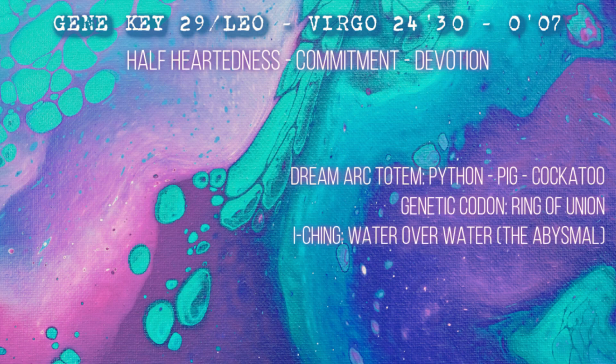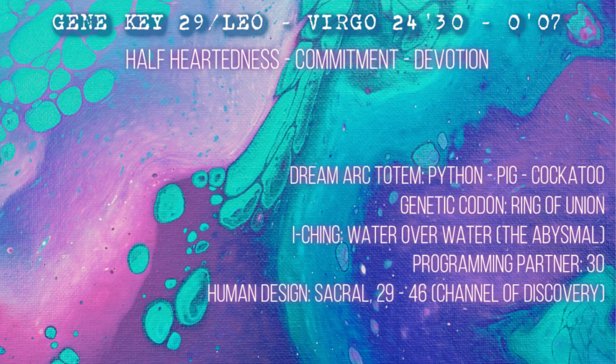In the 64 I Ching hexagram, this is water over water - total water - the abysmal. The plunge into the roaring rapids; the only danger of the abyss lies in our fear to cross it. The programming partner of this Gene Key is Gene Key 30, which carries the energy of desire - I just made a video on that and highly recommend you check it out.